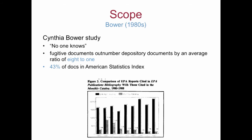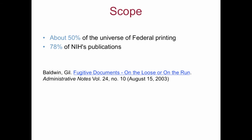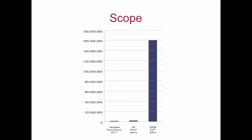Bauer found that the fugitive problem varied by agency and type. Digging into specifics, she found that 43% of the documents listed in American Statistics Index were fugitives. She found that EPA publications became less and less likely to be listed in the monthly catalog over the decades she studied, and therefore not in the FDLP. Gil Baldwin, director of GPO's Library Program Service, estimated in 2003 that about 50% of the universe of federal printing was fugitive, and that 78% of the publications of the National Institutes of Health were fugitives.